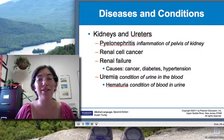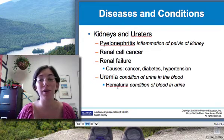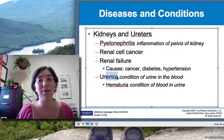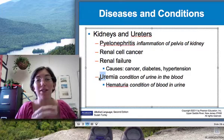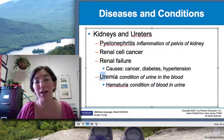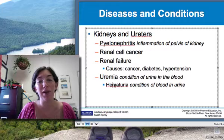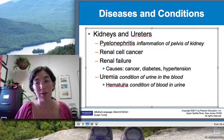Uremia is a condition of urine in the blood — not to be confused with hematuria, which is a condition of blood in the urine. The suffix -emia literally means condition of the blood, so whatever the combining form is indicates what is found in the blood. So uremia is urine in the blood, whereas hematuria is blood in the urine — try to keep those two straight.